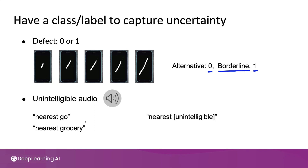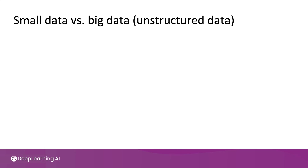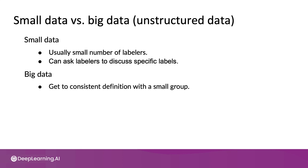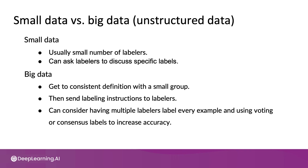Let me wrap up with some suggestions for working with small versus big data sets to improve label consistency. We've been talking about unstructured data where we can count on people to label the data. For small data sets, there's usually a small number of labelers, and so when you find an inconsistency, you can ask the labelers to sit down, discuss a specific image or audio clip, and try to drive toward agreement. For big data sets, it's more common to try to get to a consistent definition with a small group and then send the labeling instructions to a larger group of labelers. One other technique that is commonly used — but I think overused — is to have multiple labelers label every example and then let them vote. Voting is sometimes called consensus labeling, used to increase accuracy.